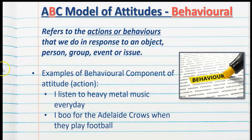The B in the ABC model refers to the behaviour or actions that we do in response to an object, person, group, event or issue. Examples of behavioural components may be: I listen to heavy metal music every day, or I boo the Adelaide Crows when they play football. It is also possible for there to be a lack of action, especially with a negative attitude — so another correct answer would be: I never watch the Adelaide Crows. An absence of behaviour can also correctly reflect the attitude.